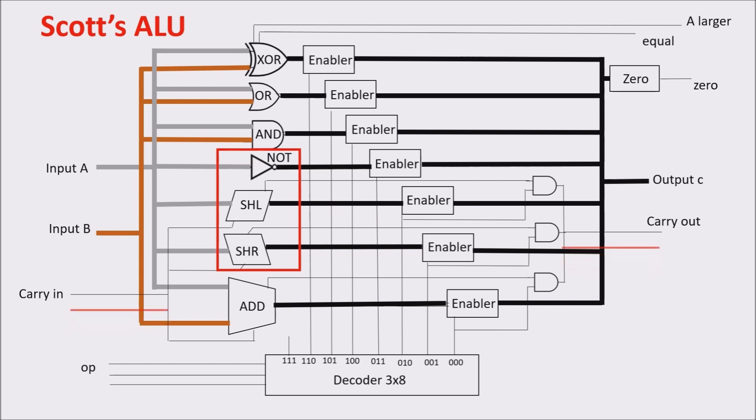Actually, we can put together the carry with the shift in or the shift out because they are used in a very similar way. Important inputs of the ALU are the op lines. Having 7 components, this ALU needs just a 3 to 8 decoder. So, we have 3 operation lines. You see, the combination 0 0 0 opens the enabler of the adder, letting the adder output pass. 0 0 1 lets the right shifter output pass, and so on.